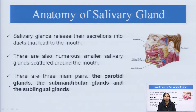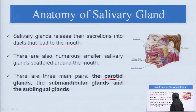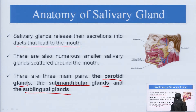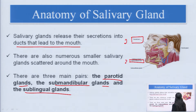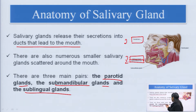Salivary glands release secretions into ducts that lead to the mouth. There are three types of glands as part of the salivary glands: the parotid gland, submandibular gland, and sublingual gland. From this picture, the first is the parotid, located at this site; the second is the submandibular gland; and the third is the sublingual, located near the submandibular. There are many more glands, but the most important are these three.